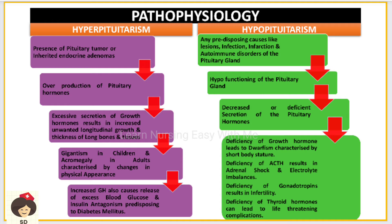In gigantism and acromegaly there is an abnormal increased body appearance where all tissues are very enlarged. Increased growth hormone also releases excess blood glucose and causes insulin antagonism — meaning insulin cannot suppress all this glucose — predisposing the person to diabetes mellitus because of increased glucose in the blood.